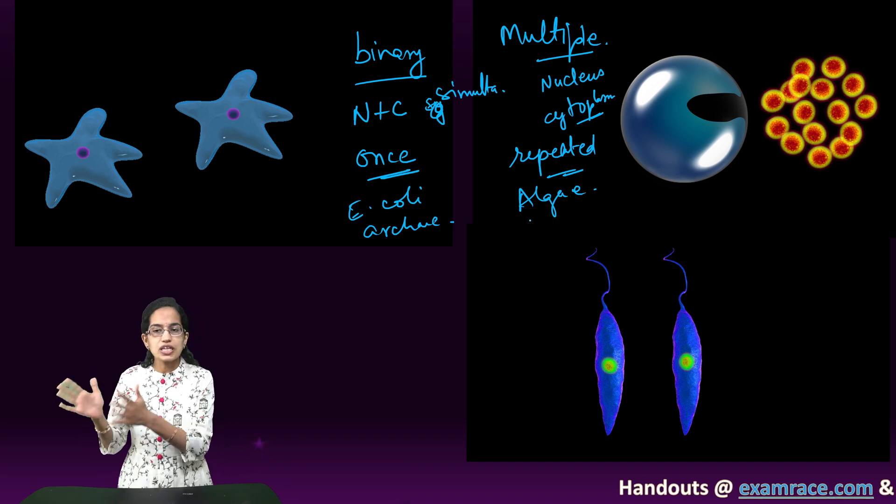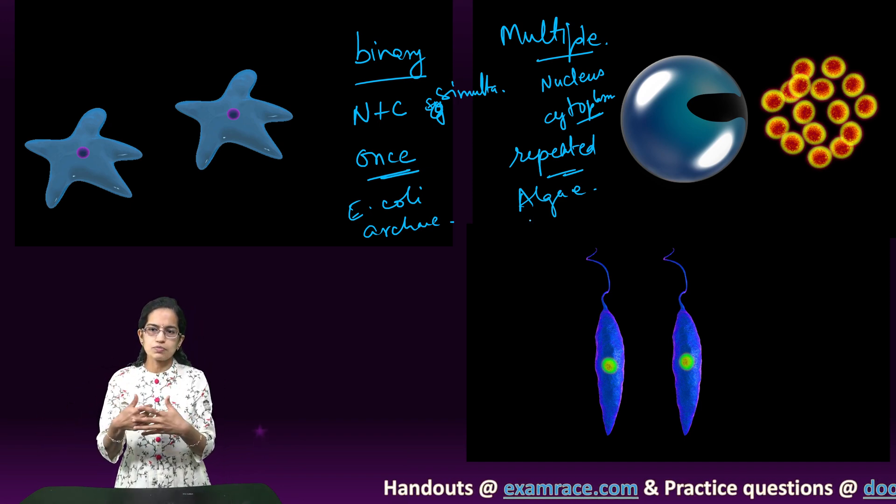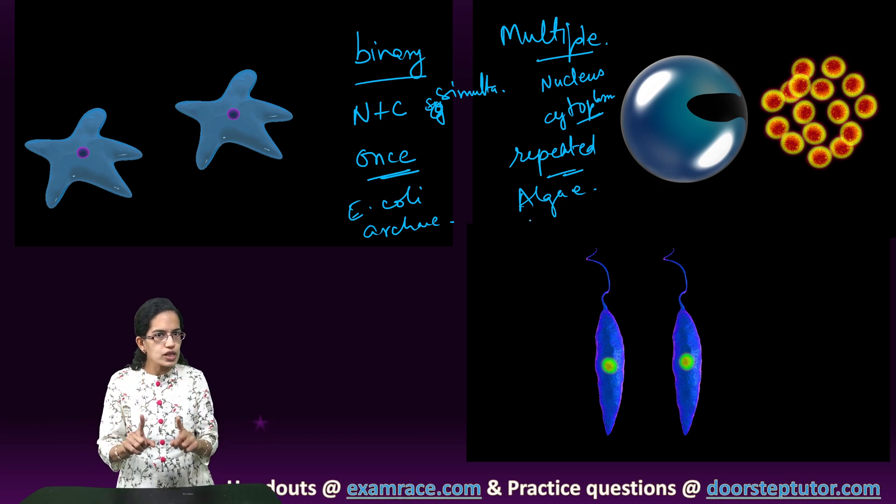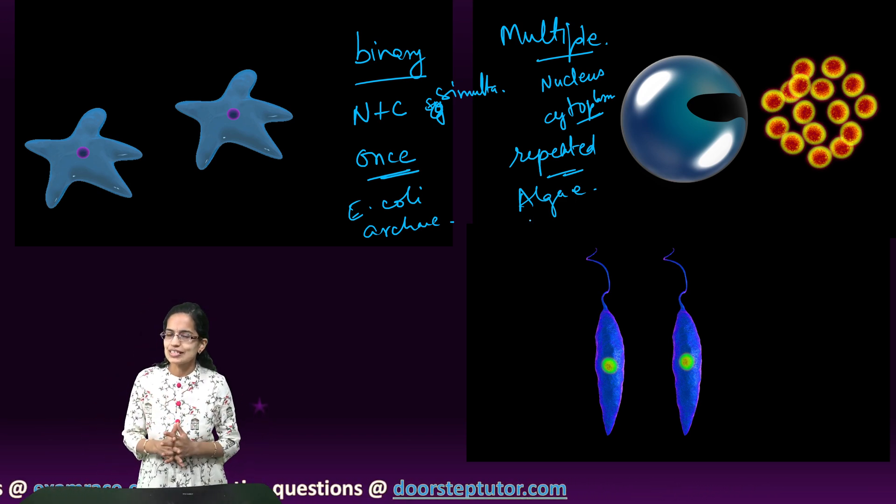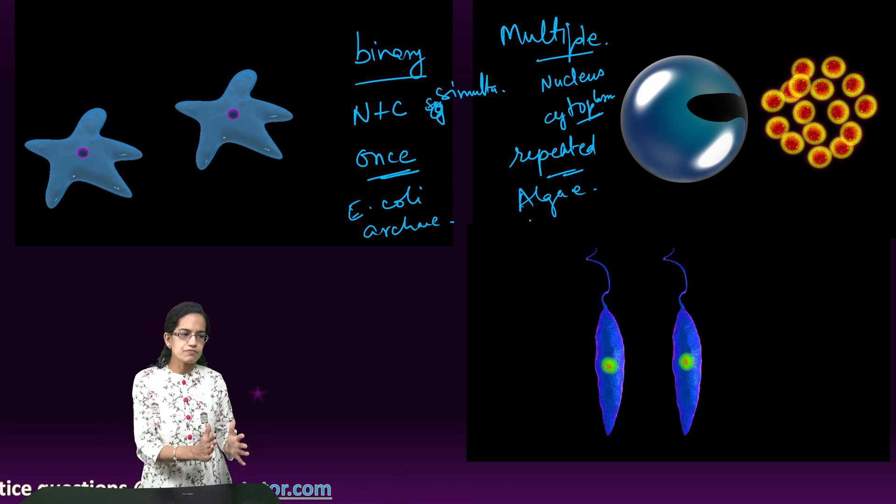In binary you have single division, only two cells being produced, division occurring only once. Those are some of the basic differences that we understand between binary fission and multiple fission.